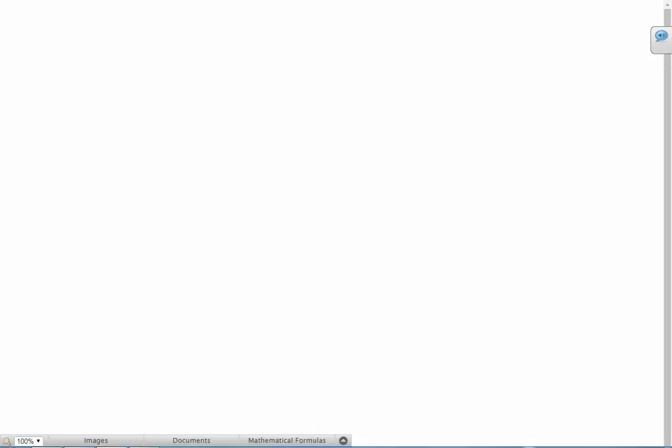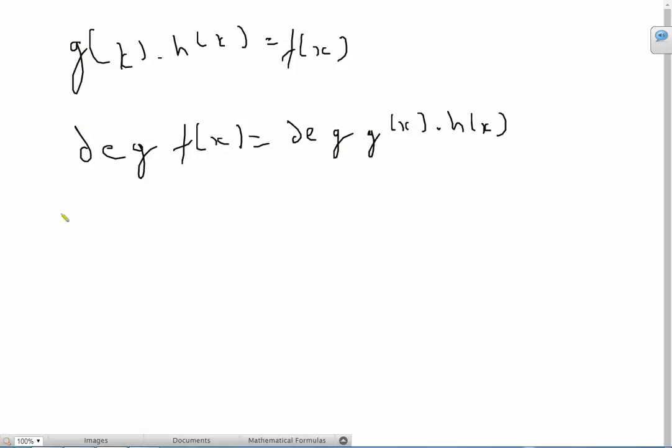Now basically the proof is pretty much complete. All you have to realize now is that if g(x) times h(x) equals f(x) for all x, and we know that neither g(x) nor h(x) are constant polynomials, then the degree of f(x) equals the degree of g(x) times h(x). So at most the degree of either g(x) or h(x) is less than or equal to n minus 1.